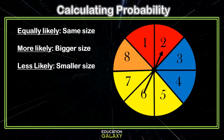When you're calculating probability, something is equally likely to happen if there's the same chance of happening. Take our spinner for example. There are two reds and there are two blues. So it's equally likely that you land on red as it is that you land on blue.